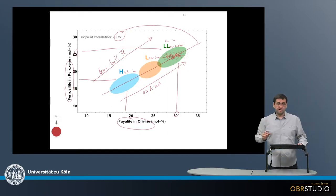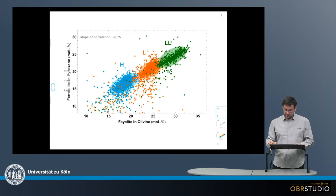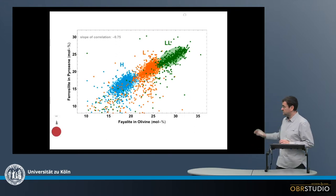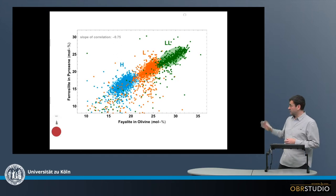I then plotted data from MetBase into this diagram to see how real data look in this classification plot. So this is done here. All the green points are classified as LL chondrites in MetBase, the orange points as L chondrites, and the blue points as H chondrites.